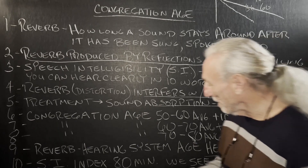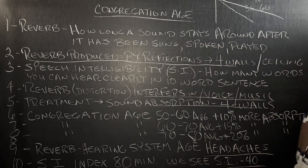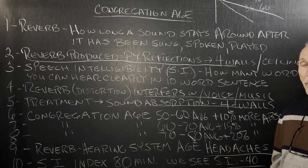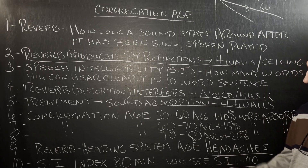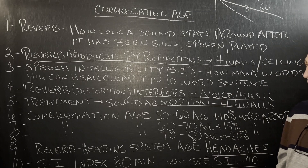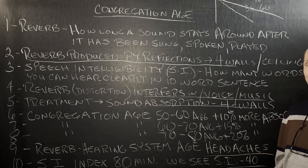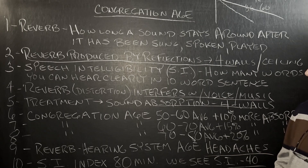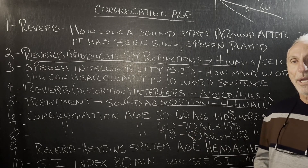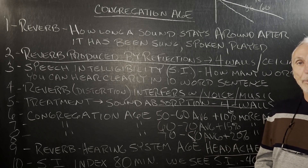We go for 80 as a speech intelligibility score, but we see mostly around 40 in churches. There's a direct correlation between speech intelligibility and reverb times. If you have a six-second reverb time, depending on the room size, you're going to have a very low speech intelligibility number. The age of the congregation must be taken into consideration when we lower reverb times in churches or any large venue.